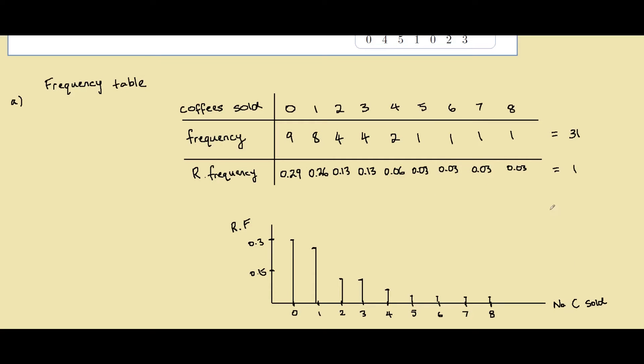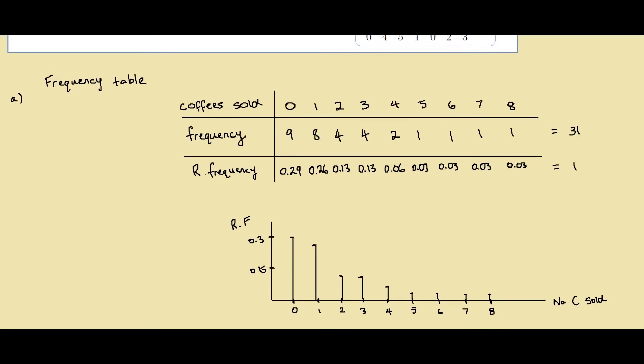So what we can say about our relative frequency diagram is that it is decreasing with the number of coffees sold. And it's got a long right tail. And also it's not symmetric.